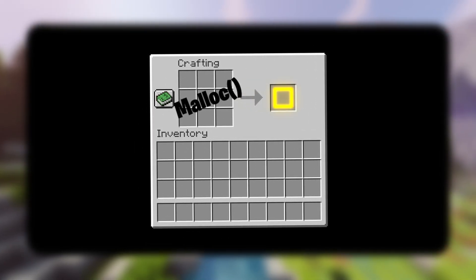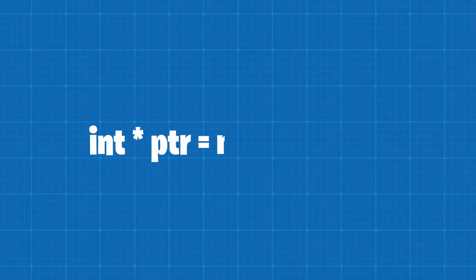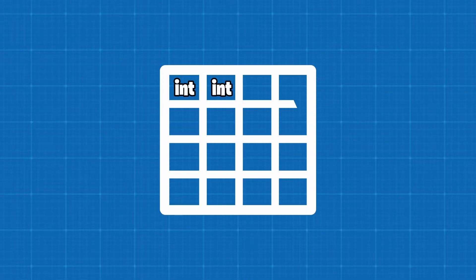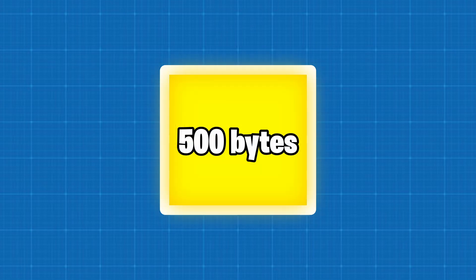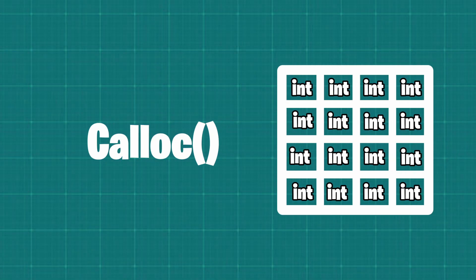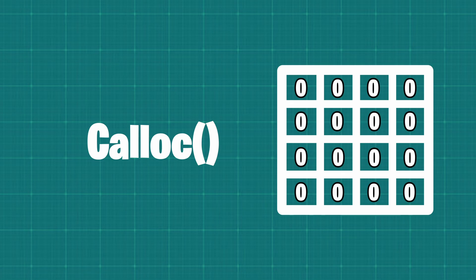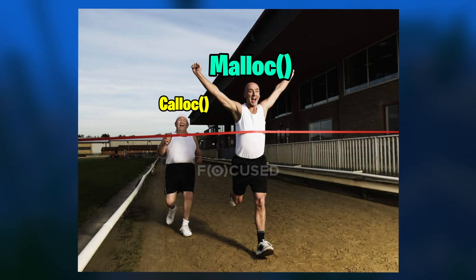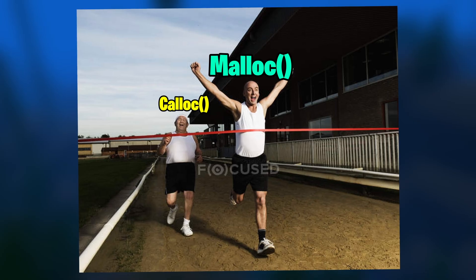We can create these blocks by, as an example, using the malloc function. If we were to write int pointer equal to malloc(500), we will get a block of integers in the memory the size of 500 bytes. We then get a pointer back from the function, pointing to the first address of the memory block. Calloc does the same thing as malloc. The only difference is that it also makes all the values be zero in the block. This also means that calloc is a bit slower than malloc.